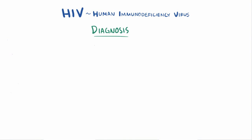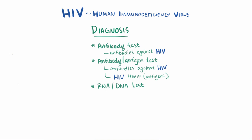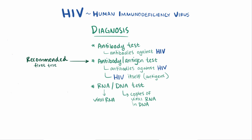As far as diagnosis goes, there are a few types of HIV tests that can be done: antibody tests, antibody/antigen tests, and RNA/DNA tests. Antibody tests look for antibodies that the body made against HIV. Antigen tests look for the virus directly, so antibody-antigen tests detect both antibodies to the virus as well as the virus itself. RNA tests screen for viral RNA, so they also detect the virus directly. DNA tests look for copies of the viral RNA, since remember it's a retrovirus so it copies its genetic material into DNA. For screening purposes, the recommended test is the antibody-antigen test, which is better at identifying early infection. It's also recommended, if the first test is positive, to follow it with a confirmatory test that looks for antibodies or nucleic acids.